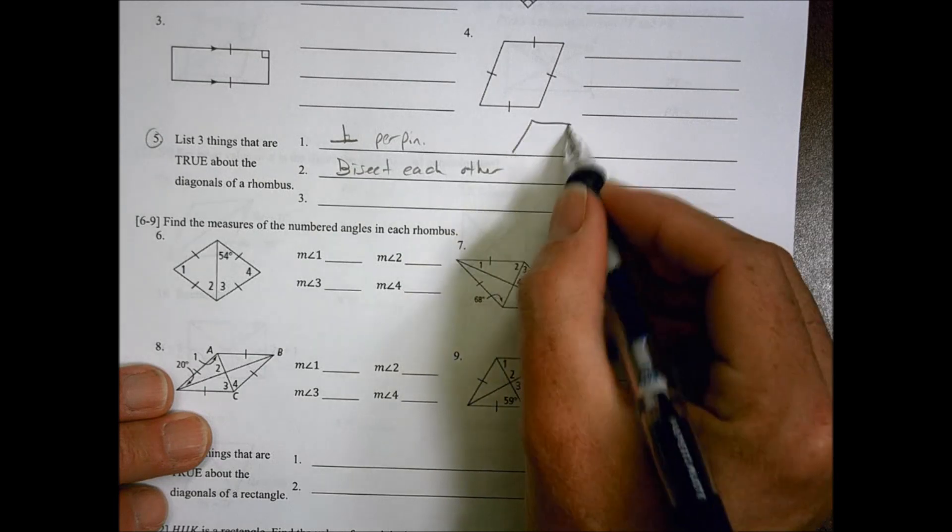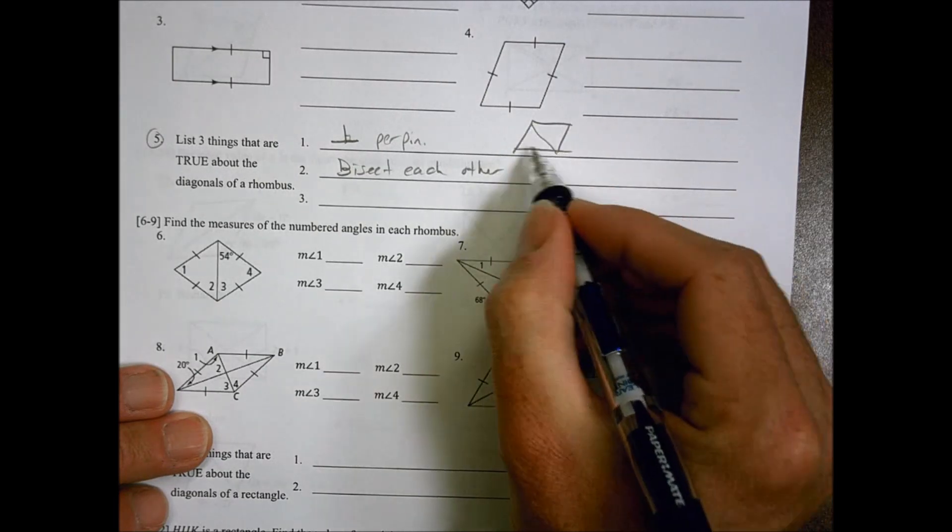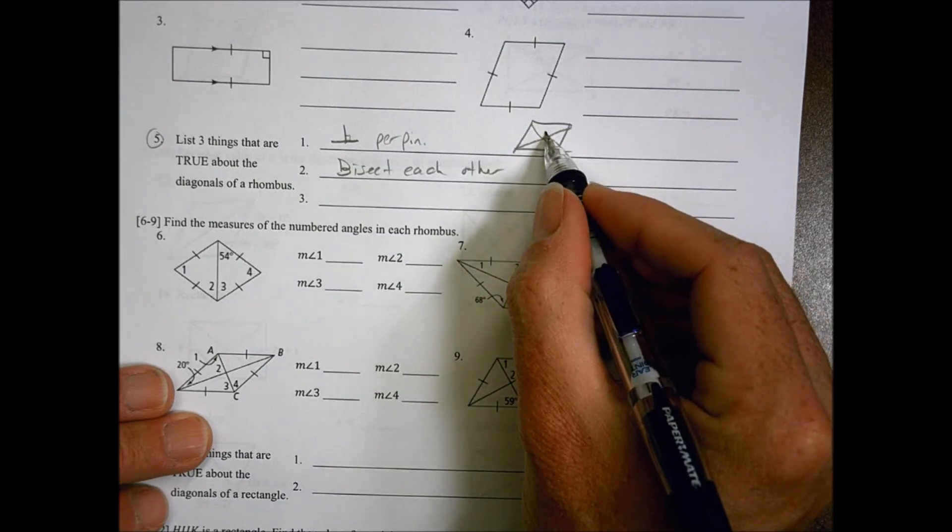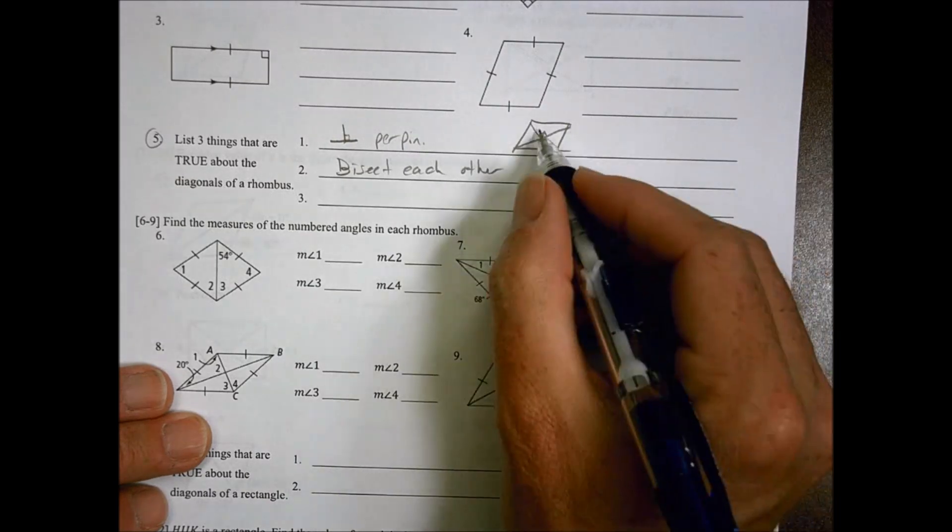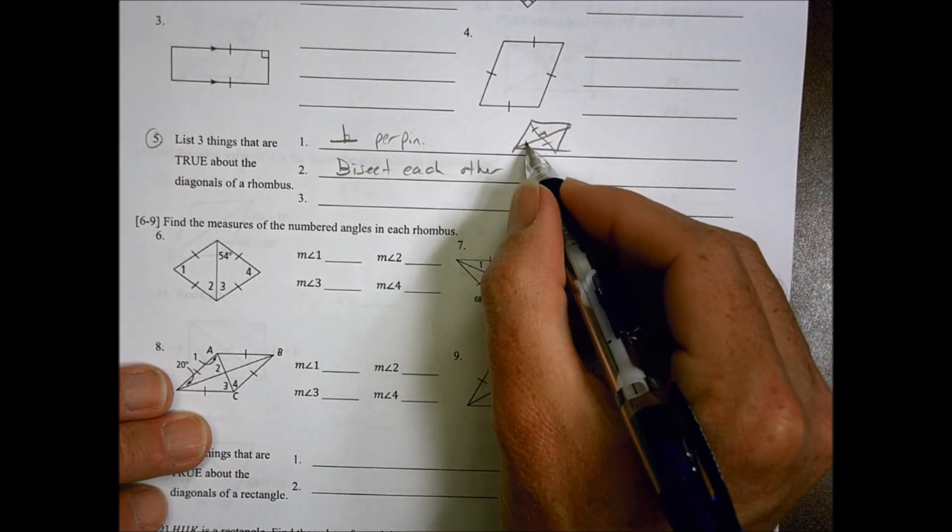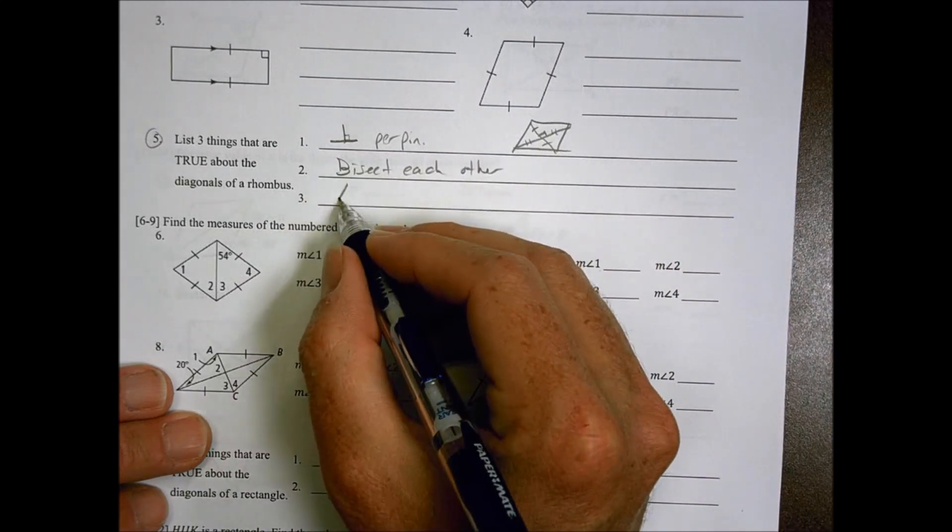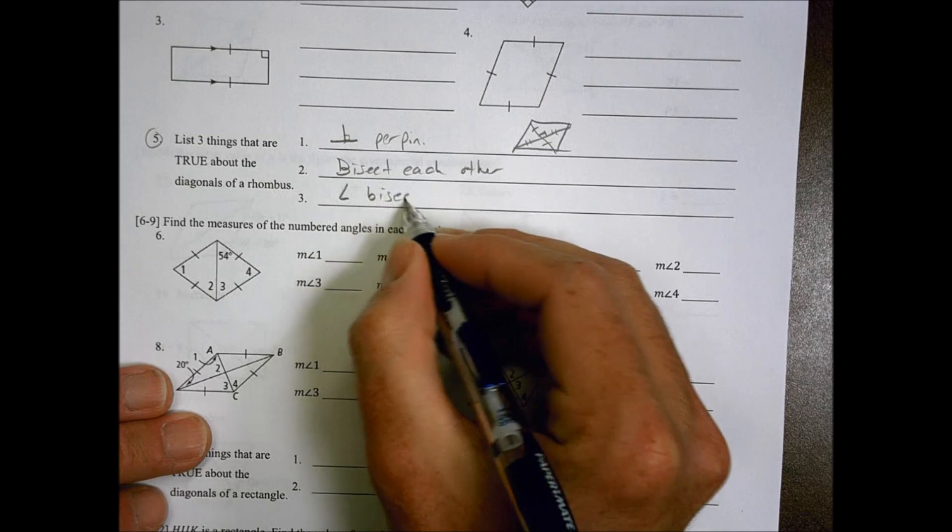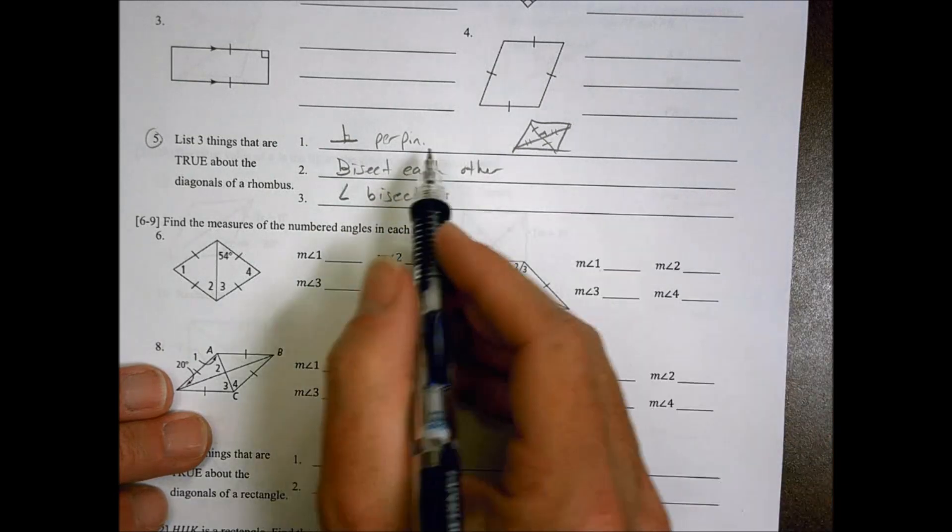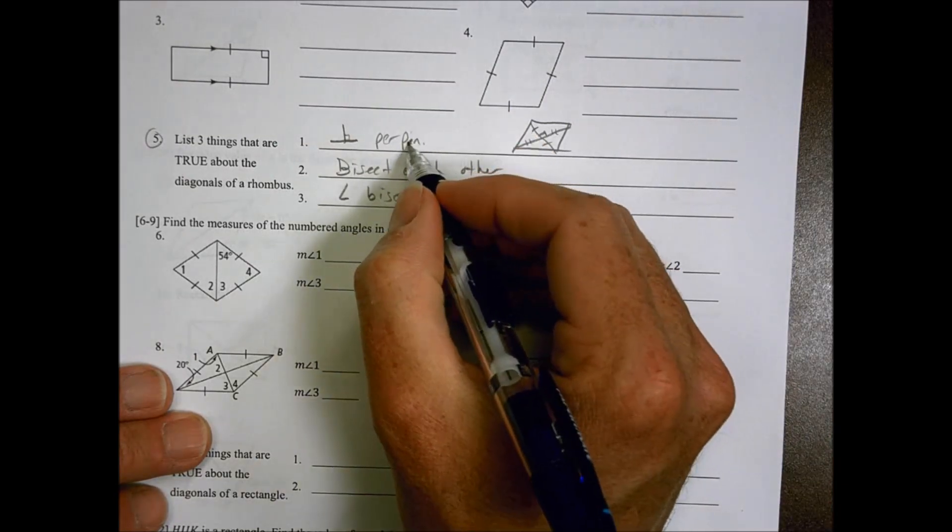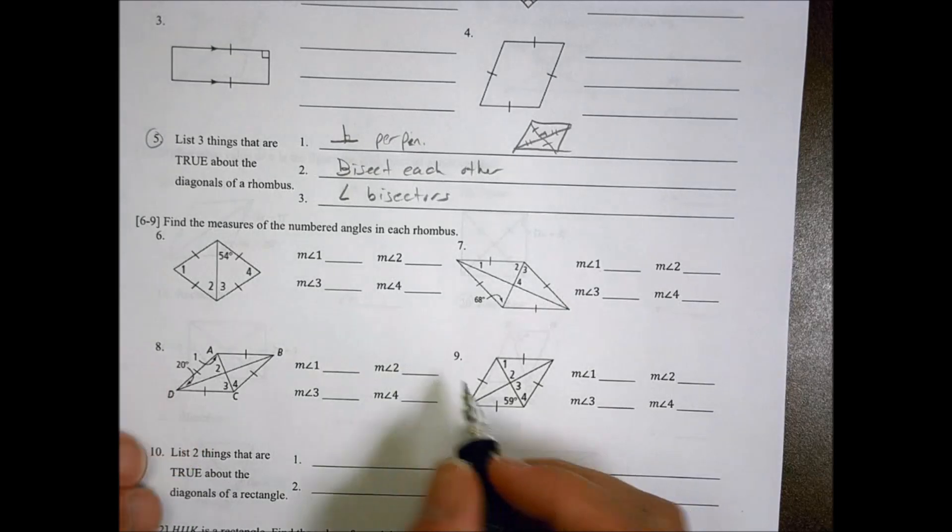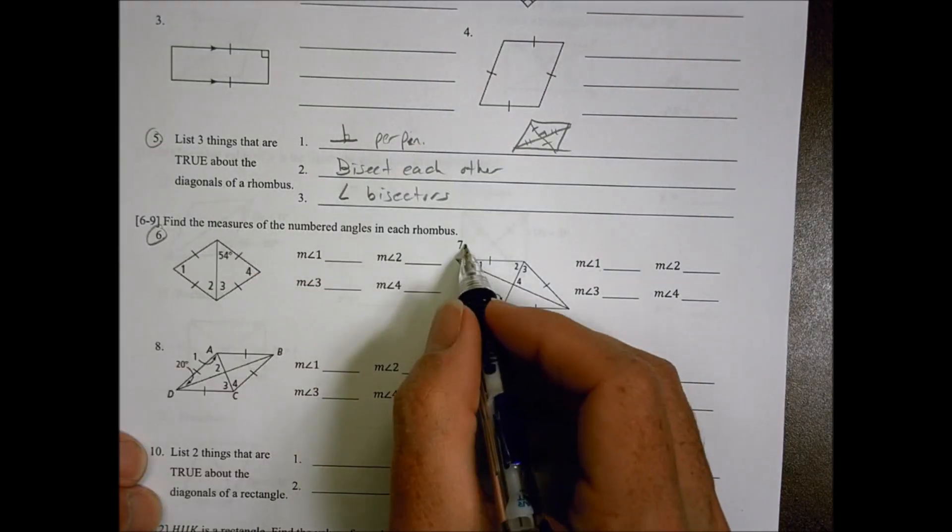So again, if I have my shape like so, and I draw a line, I'm going to have a 90 degree angle right there. I'm also going to say that's going to be equal, and those are going to be equal there. The other thing with the rhombus is that I'm creating angle bisectors by doing so. I need to know those three things in order to answer the next questions down below, number 6 and number 7.